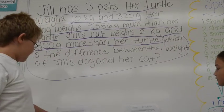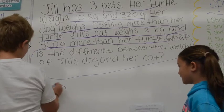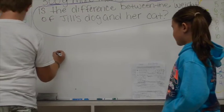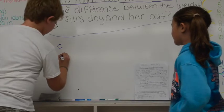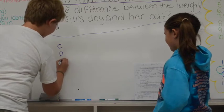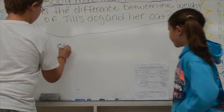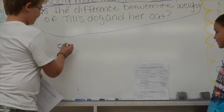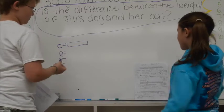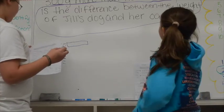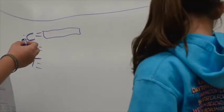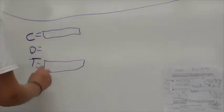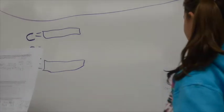All right, Bradley, so what's your first step? You have to draw your bar models. You put the number that is going to weigh — so you put 10 kilograms and 320 grams for the turtle's weight. Right, so you know how much the turtle weighs. Which one? We know how much the turtle weighs, so you can write that in the box.